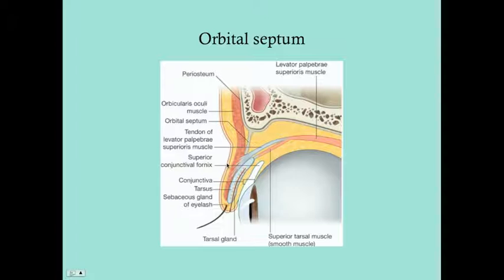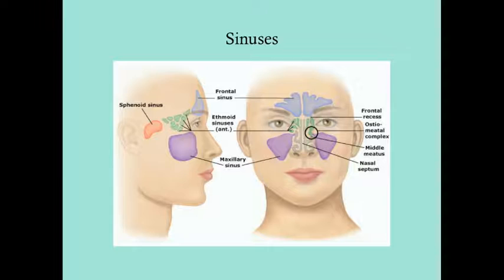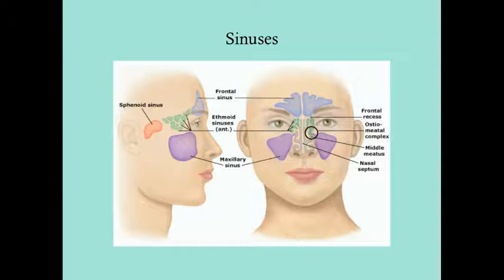Here are the sinuses, which are important because sinusitis infections, especially in the ethmoid sinuses shown here in green, have a tendency to extend and cause orbital cellulitis. It's important to know where these sinuses are so you can percuss them, because tenderness indicates sinusitis, which is highly correlated with both preseptal and orbital cellulitis — especially orbital cellulitis.